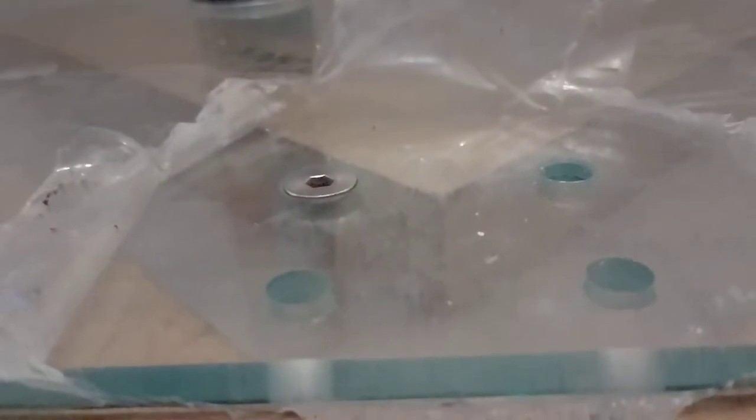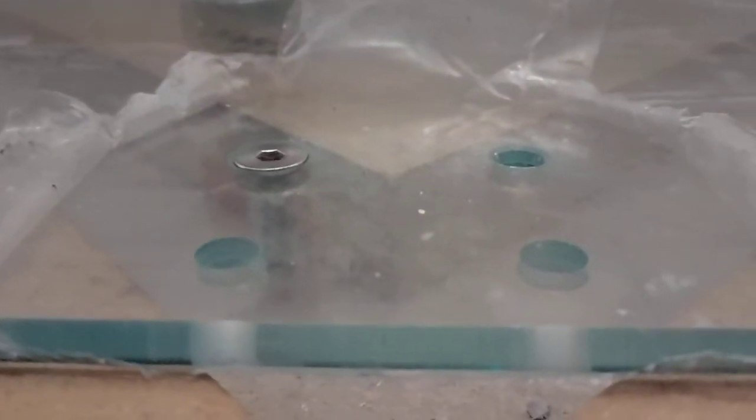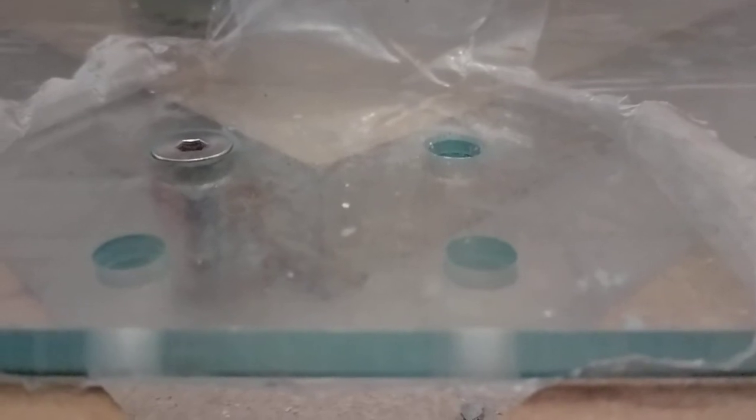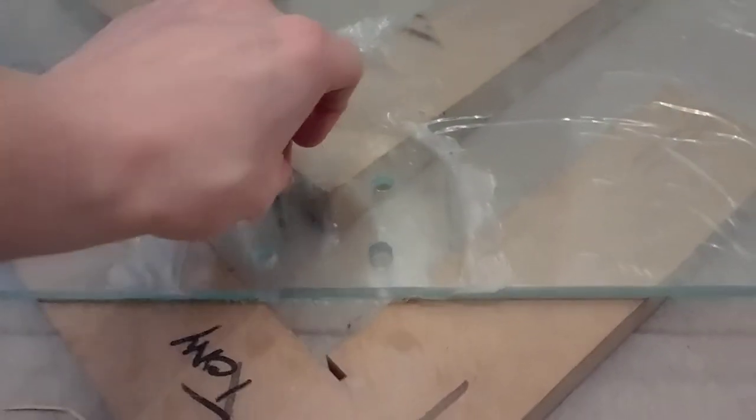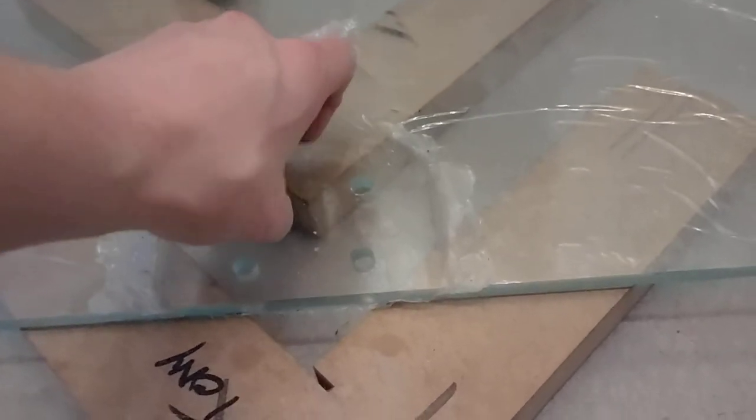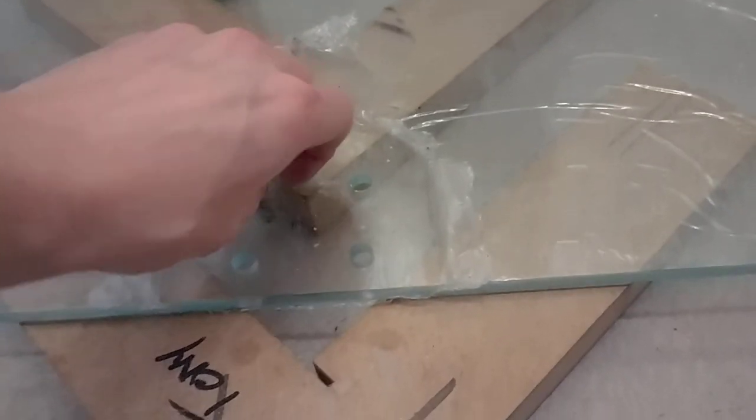And there, that's an 8mm countersunk bolt. When I eventually bolt this to something, I have sourced some plastic shields that will go into a 10mm hole for an 8mm bolt from Accu Components, I think it is accu.co.uk. I'll provide the link in the description.